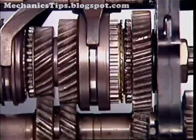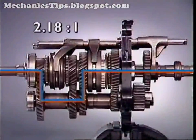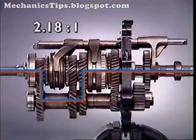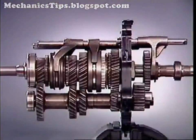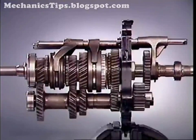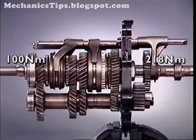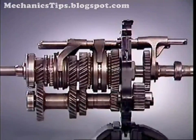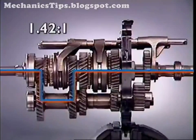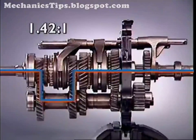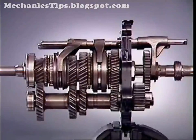In second gear, power flow is through the next adjacent gear. The difference in speed between the input and output shafts is reduced — fewer turns of the input are required to give one turn of the output — but there is less torque multiplication. When the engagement sleeve for third gear moves into place, drive is transmitted through the meshing gears at an even higher ratio.